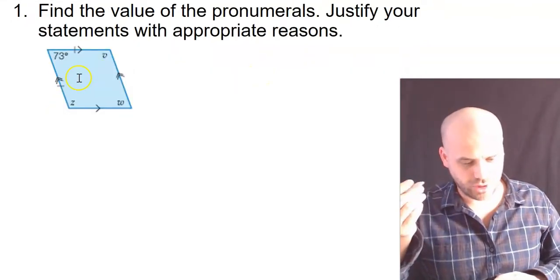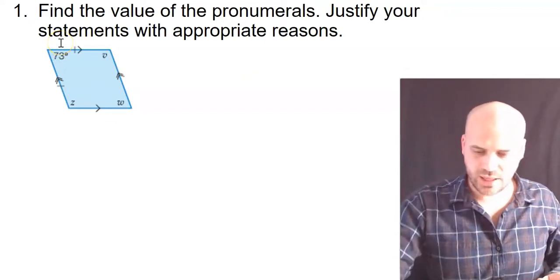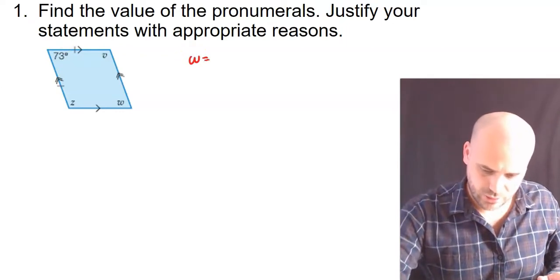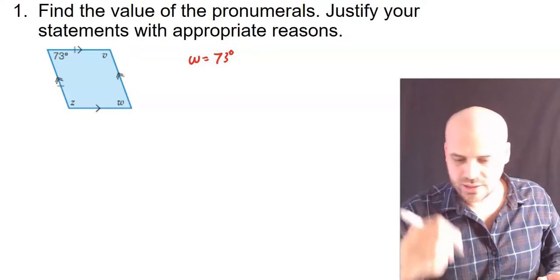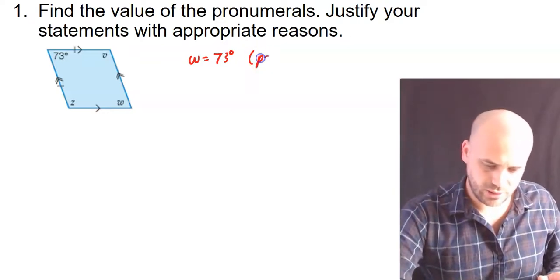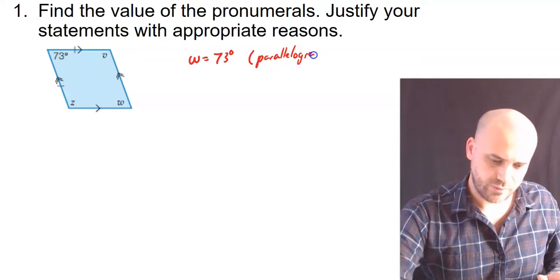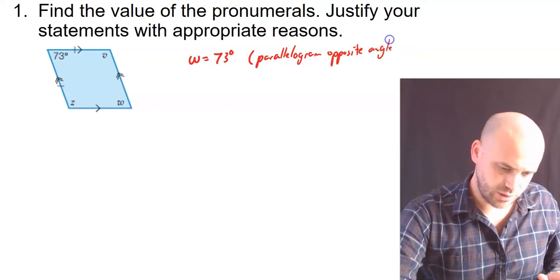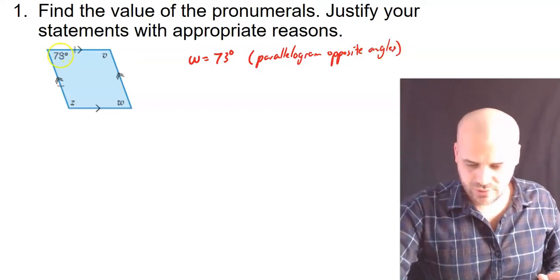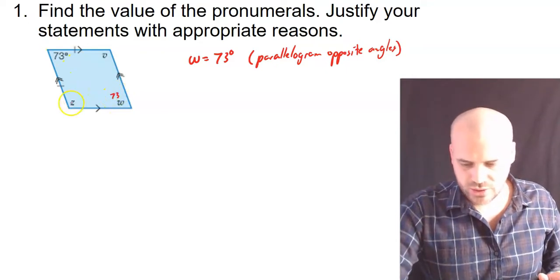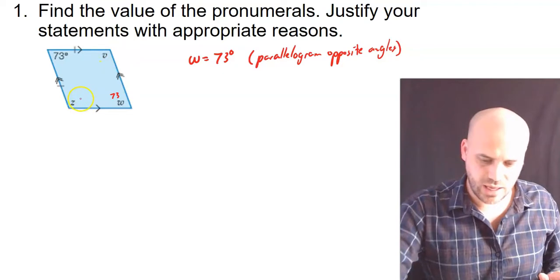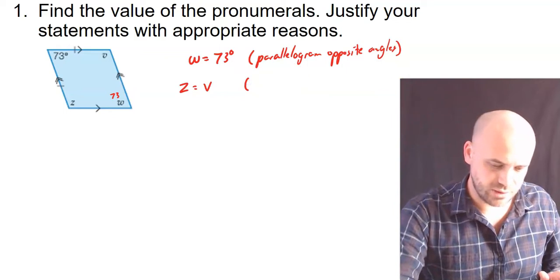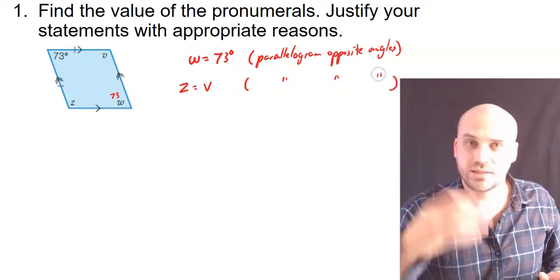Speaking of special quadrilaterals, here's one right here. We have a parallelogram. Now, we can say that a parallelogram's opposite angles are equal, which means that w equals 73 degrees. And the reason it equals 73 degrees is because parallelogram opposite angles. It's really about communicating your ideas. So, if that's 73 and that's 73, I can also say that z and v are equal, and z and v are equal for the same reason. And I'll just do little dashes here to say same reason.